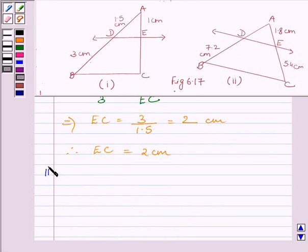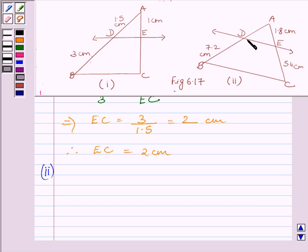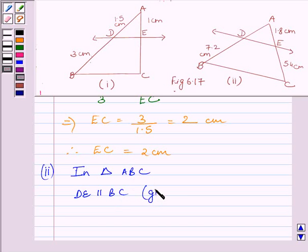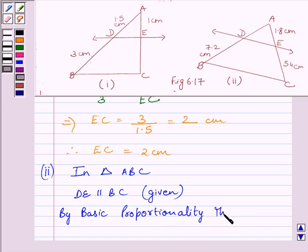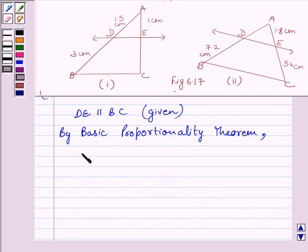Let us now start the solution for the second part. In the second part, clearly we can see DE is parallel to BC as it is given in the question. This implies AD upon DB must be equal to AE upon EC by the basic proportionality theorem, since AB and AC are intersected by DE at two distinct points D and E. So DE will divide AB and AC in the same ratio. In triangle ABC, DE is parallel to BC. This is given to us. By the basic proportionality theorem, we get AD upon DB is equal to AE upon EC.